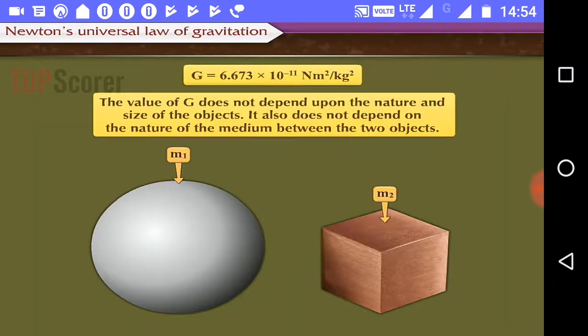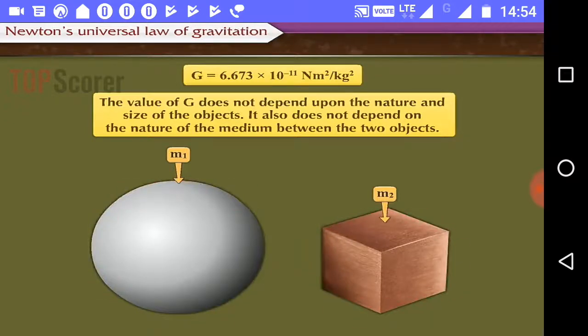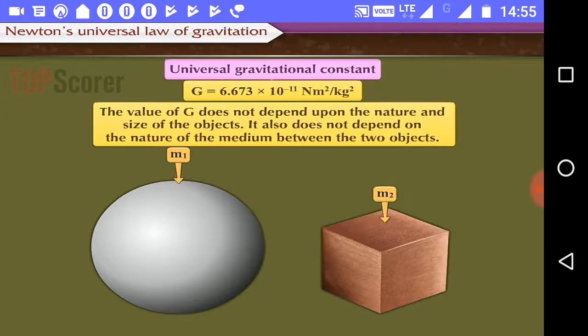The value of G does not depend upon the nature and size of the objects. It also does not depend upon the nature of the medium between the two objects. Therefore, it is called the universal constant of gravitation.